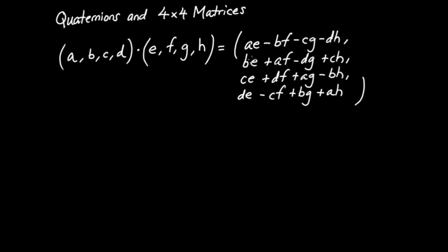The second component, or the I component, given by this, and then the third, or the J component, by that formula, and then the last component, or the K component, is going to be given by this formula. This is the same formula I had written out last time. The only thing I did here is switch the order of a few terms — just commuted those terms — so that the E's, F's, G's, and H's are going to line up column-wise.